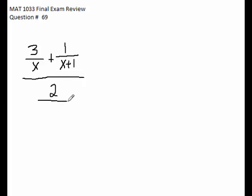MAT 1033 final exam review question number 69. Simplify the complex fraction. We've got 3 over x plus 1 over x plus 1, and that's divided by 2 over x squared plus x.